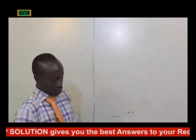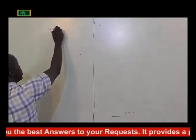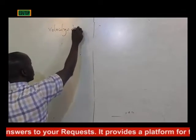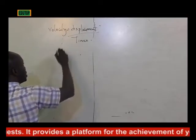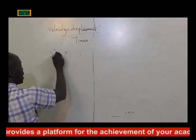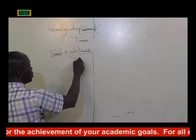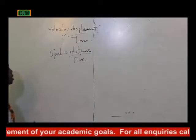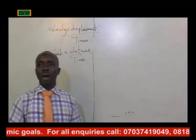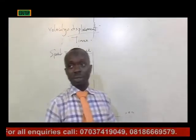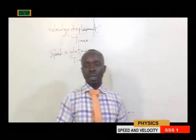Velocity can also be expressed as displacement per time. That's one of the two major differences: speed is distance per time, while velocity is displacement per time. Velocity is also defined as the rate of change of displacement with time.